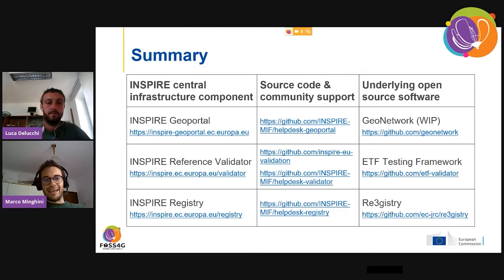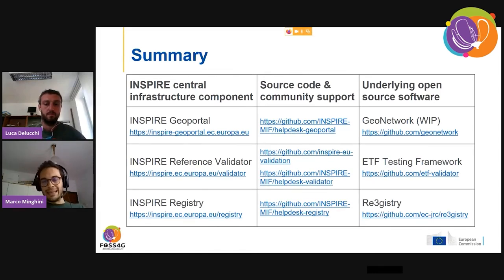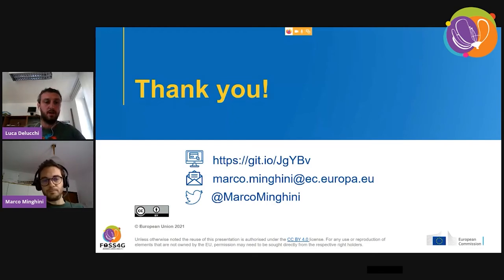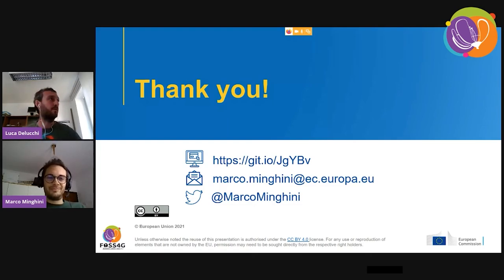To summarize, we have presented three components — the geoportal, the reference validator, and the registry — with relevant links to the source code repositories and community support, and a reminder of the open source components being used or planned for each. For the geoportal that will be GeoNetwork. Here are my contacts; the first link points to the slides. Thank you.